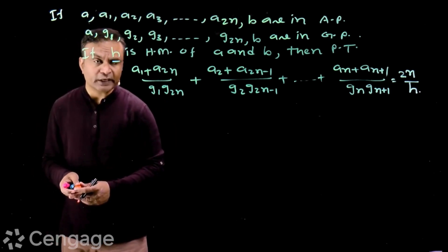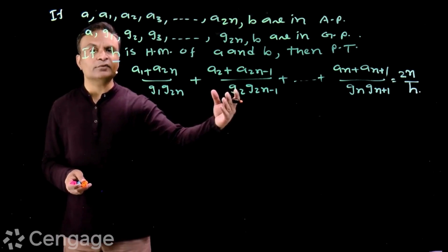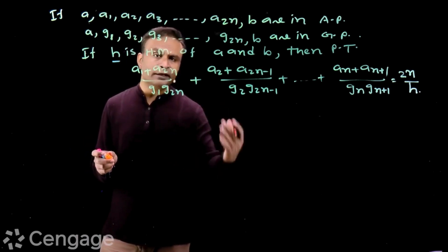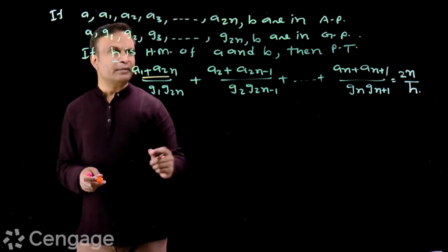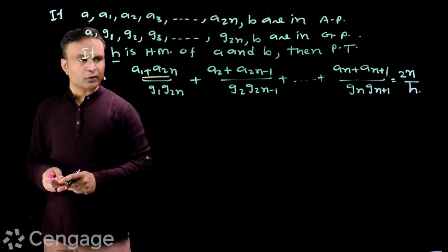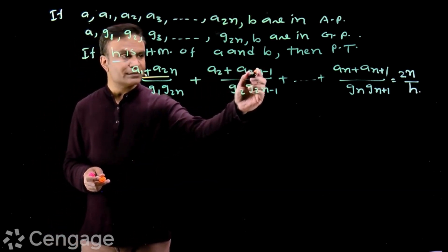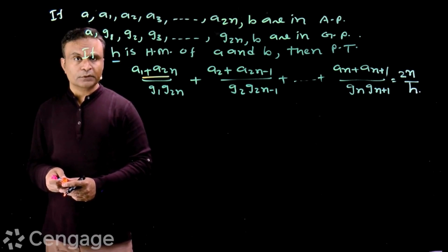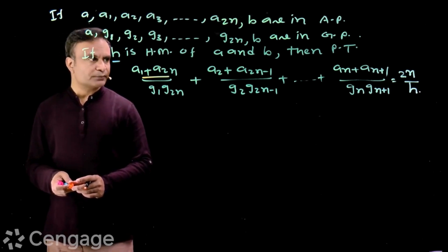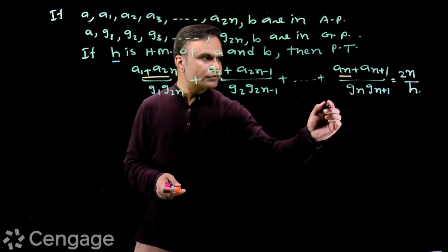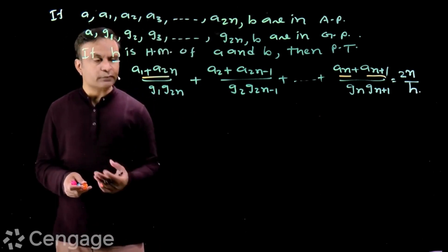We have done this in properties of AP: the sum of the rth term from the start and rth term from the end is constant, which is equal to the sum of the first term and last term. So a1 + a2n = a + b. Then a2 + a2n-1 — this sum is also a plus b, because a2 is the third term from the start and a2n-1 is the third term from the end. In the next terms also the numerator will be a + b. In fact, in all the terms the numerator will be a plus b.